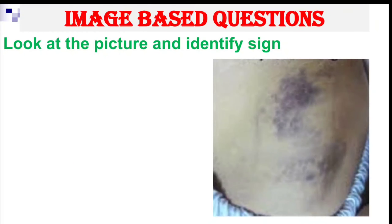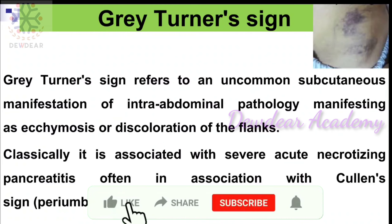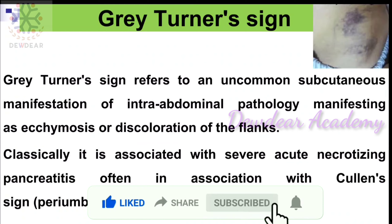Next question: look at the picture and identify the sign. The answer is Grey Turner's sign. Grey Turner's sign refers to an uncommon subcutaneous manifestation of intra-abdominal pathology, manifesting as ecchymosis or discoloration of the flank. Classically it is associated with severe acute necrotizing pancreatitis, often in association with Cullen's sign, which is periumbilical ecchymosis.